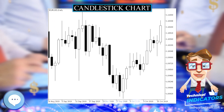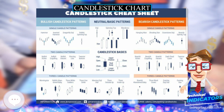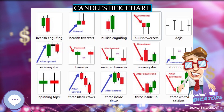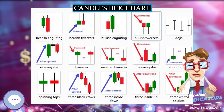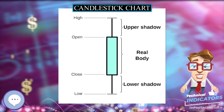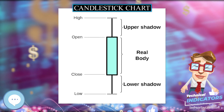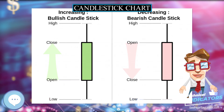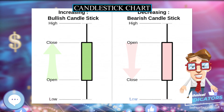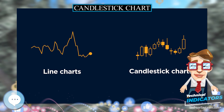Heikin-Ashi, Japanese for 'average bar', candlesticks are a weighted version of candlesticks calculated with the following formula. The body of a Heikin-Ashi candle does not always represent the actual open or close. Unlike with regular candlesticks, a long wick shows more strength, whereas the same period on a standard chart might show a long body with little or no wick.